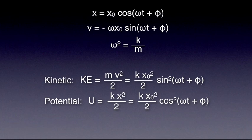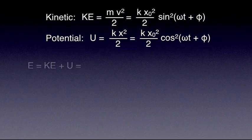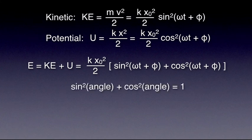We can now write an expression of the total energy by simply adding the two. Total energy is kx0 squared over 2 multiplied by sin squared of omega t plus phi plus cos squared omega t plus phi. You might be familiar with the trigonometric formula sin squared of an angle plus cos squared of that angle equals 1. Using this simple formula, we can write the following expression for the total energy: E equals kx0 squared over 2.